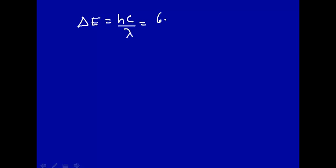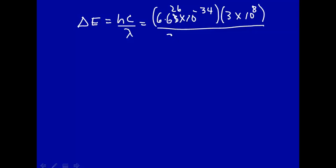h is 6.63×10⁻³⁴, well let's use 6.626×10⁻³⁴ because we have 4 significant figures. And c is about 3×10⁸ to 4 significant figures, divided by the energy level separation, which is 0.5974×10⁻⁹, everything in SI units.